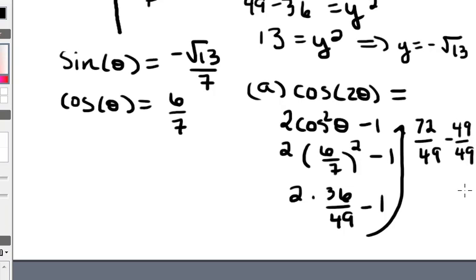So I can rewrite 1 as 49 over 49. And if I subtract 49 from 72, I get 23 over 49. So the cosine of 2 theta in this case is 23 over 49.